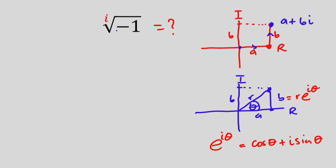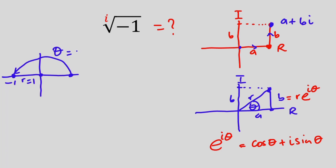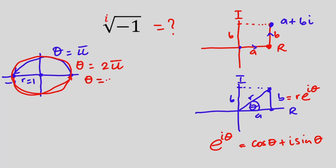Now we have negative one over here, so on a Cartesian plane negative one will be somewhere here. The distance from the origin to this point — because we are talking about distance it will be positive — so let's call r equal to one. Now at this point, if we move in this direction all the way to this point, then we can find theta, which is equal to pi, that is 180 degrees. If we continue the rotation all the way to this point then theta is going to be 2 pi.